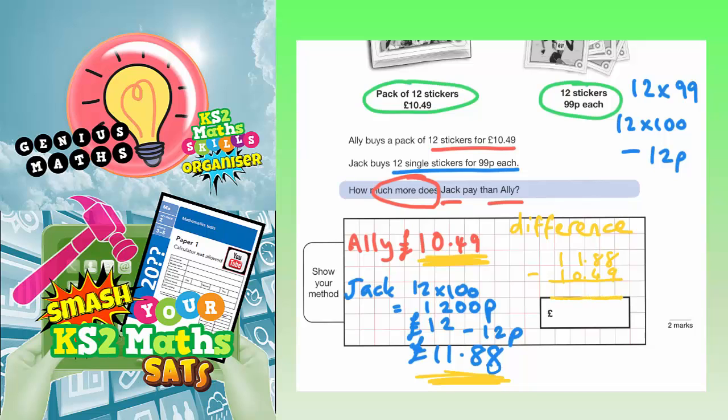So 8 take away 9 you can't do, so you need to borrow. So that's a 7 and that becomes a 1 to make 18. Carry the 1 to make 8 across. 18 take away 9 makes 9. 7 take away 4 is 3. 1 take away 0 is 1. 1 take away 0 is nothing. Put your decimal point in and you should get £1.39.